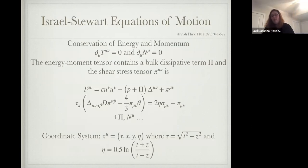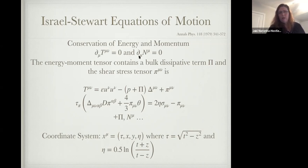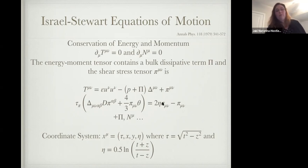The Israel-Stewart equations of motion: first, we must conserve energy and momentum. In QCD we have three conserved charges — baryon number, strangeness, and electric charge. The energy-momentum tensor T^{μν} looks fairly familiar, but the key difference when you have viscosity is this relaxation time τ_π — terms that arise from the relativistic nature of the fluid. In Navier-Stokes you'd only have the right-hand side term, but the left-side terms arise for a relativistic fluid. There are analogous equations for bulk viscosity and conserved charges. I should note there could be additional terms that I've truncated here.